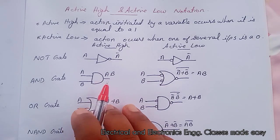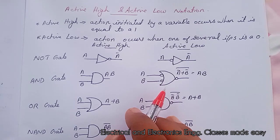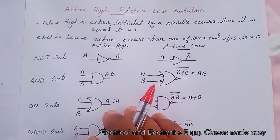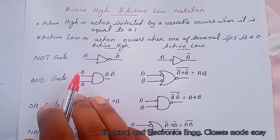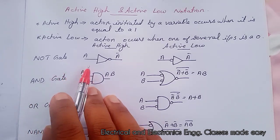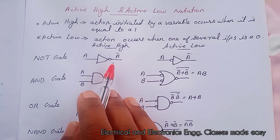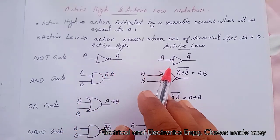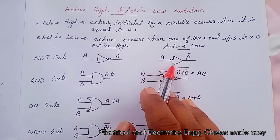The logic symbols of active high logic gates and active low versions are shown here. And this is NOT gate. So, this is active high notation for NOT gate. And this is active low notation of the NOT gate.